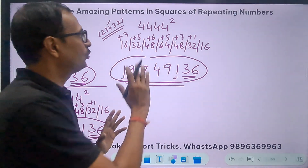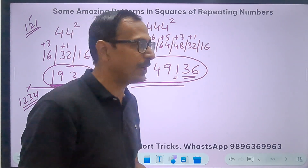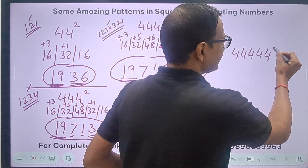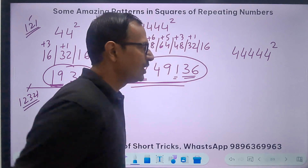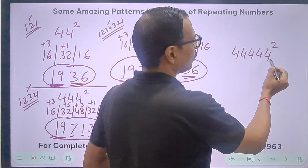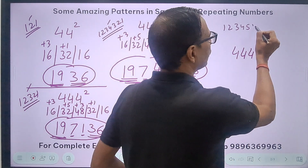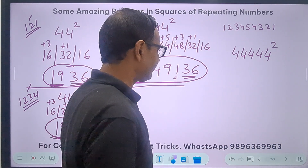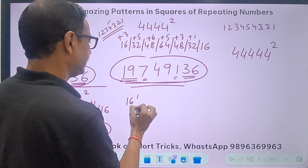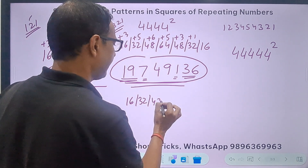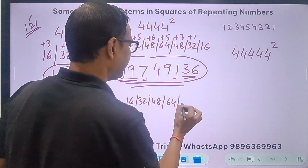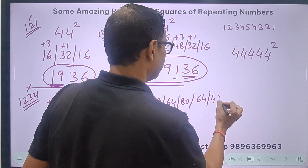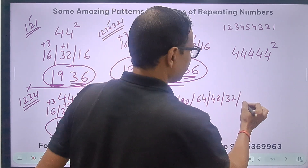So what will happen with 44444 squared? I'm really excited! I'll use the 1-2-3-4-5-4-3-2-1 rule, going up to the fifth multiple of 16: 16, 32, 48, 64, 80, then back 64, 48, 32, 16. Carrying through: 6; 33 → 3; 51 → 1; 69 → 9; 86 → 6; 72 → 2; 55 → 5; 37 → 7; then 19. So 44444² = 1974913 ... giving a big number with the same 19 and 36 bookends.